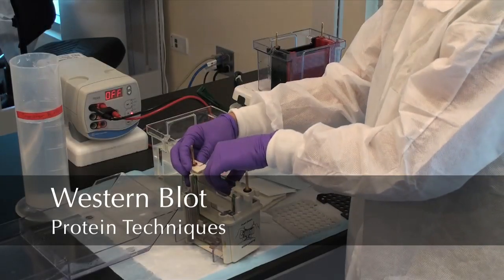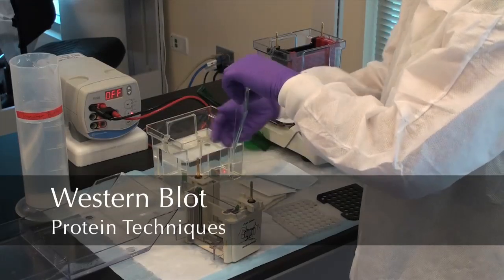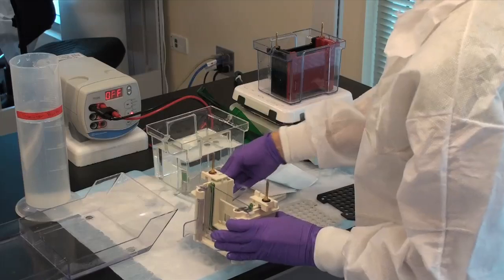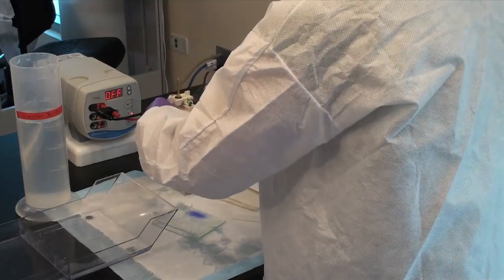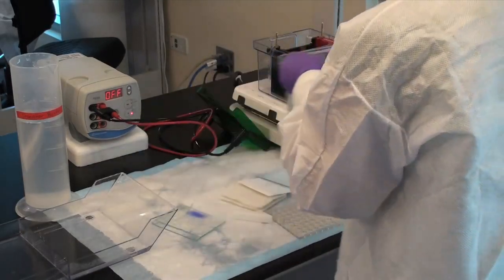Western blotting. When your gel has finished running, you should see that the dye front has moved to the bottom of your gel. Remove the gel from the electrophoresis tank and set up your transfer sandwich.